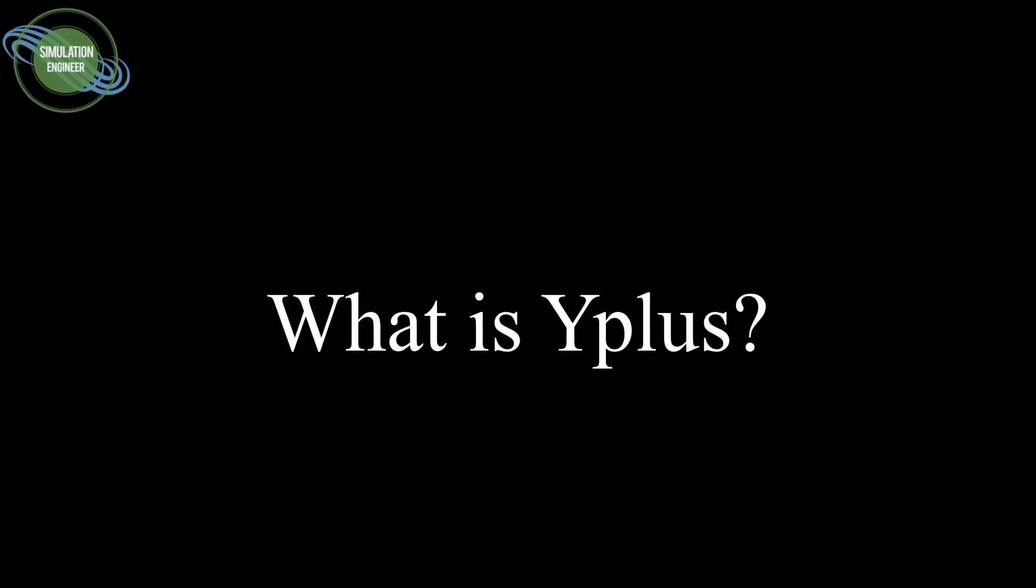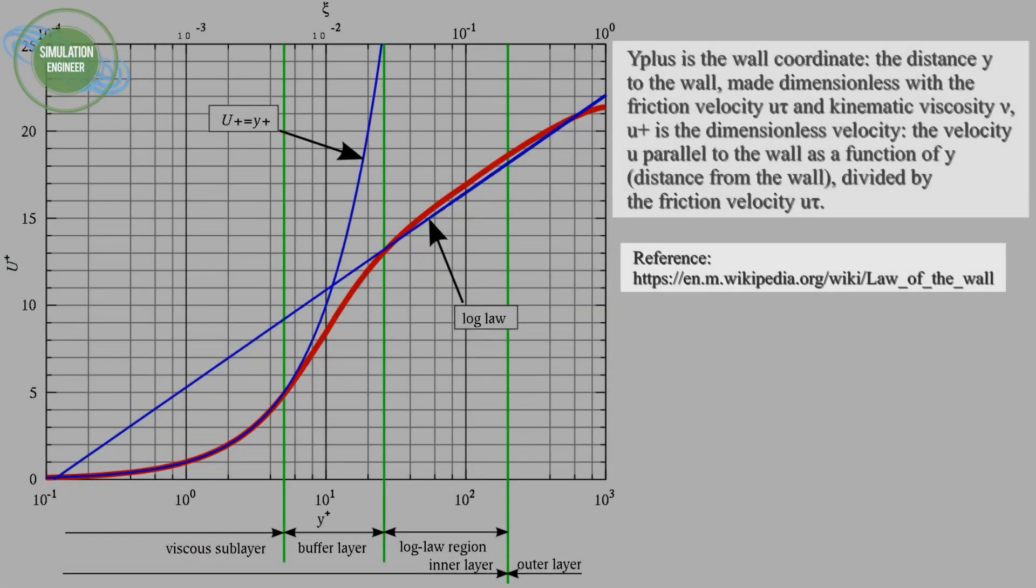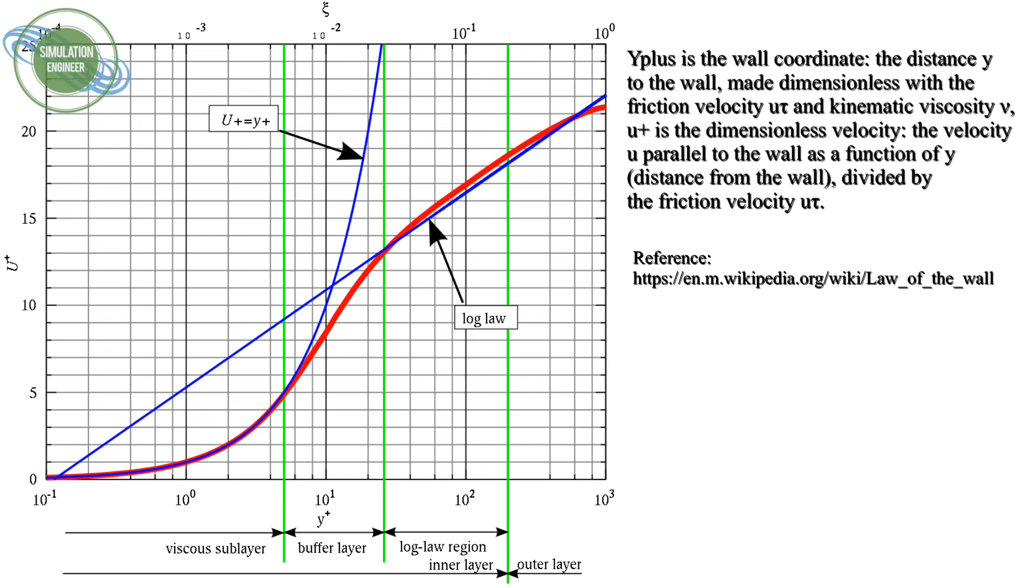Before we start with the app, let's see briefly what is y plus. As you can see flashed on the screen, y plus is the wall coordinate, a non-dimensional number. It's a very important parameter for viscous grid computations, and one has to make sure they're resolving the grid properly in order to predict the aerodynamic coefficients correctly.